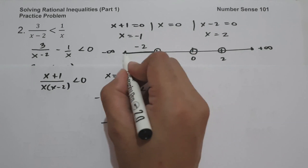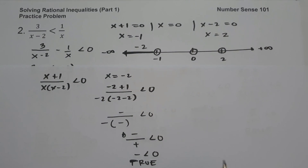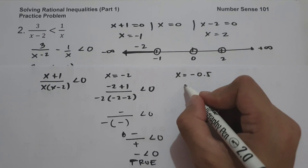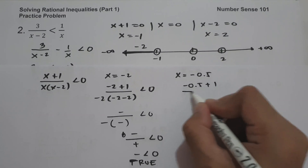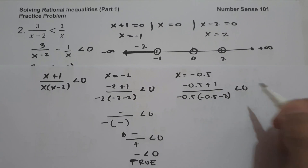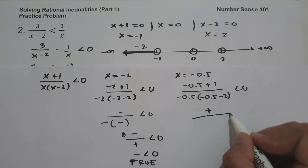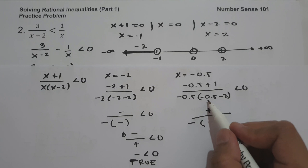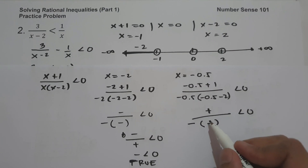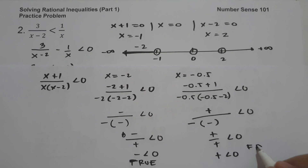Testing a number between negative 1 and 0, say x equals negative 0.5: negative 0.5 plus 1 is positive, and negative 0.5 times negative 0.5 minus 2 is positive. So positive divided by positive is positive, which is not less than 0 — this is false.